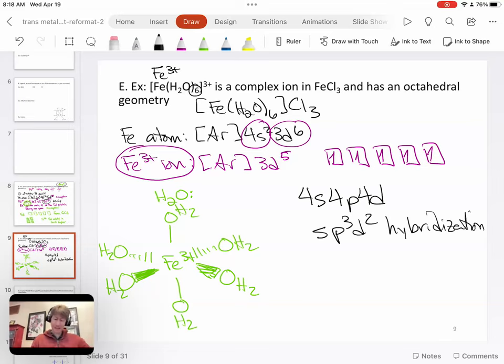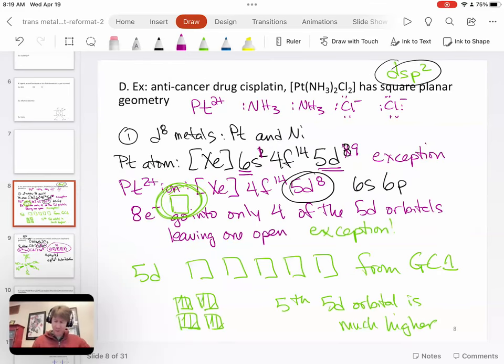And this is different than the last case. Remember, in this case, we've got all five of these 3d orbitals with at least one electron in it. And therefore, we have to go to the next orbital to choose the orbitals in which there is hybridization for the ligands.